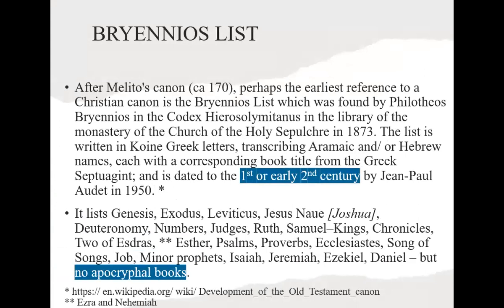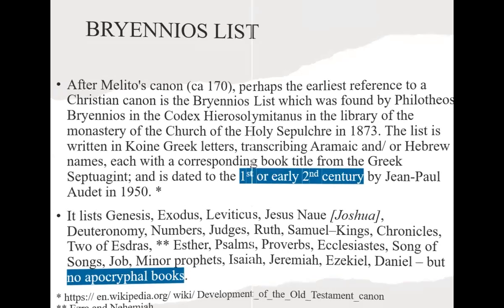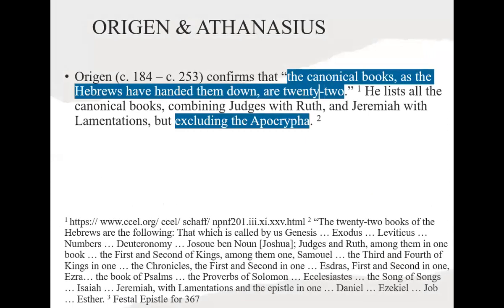After Melito, there's another early reference in what we call the Bryennios list from the first or second century, which lists Genesis, Exodus, Leviticus, Joshua, Deuteronomy, and so on — many books we're familiar with, but no apocryphal books. Origen, an early Christian from the second and third century, says the canonical books as the Hebrews have handed them down are 22, again excluding the Apocrypha.